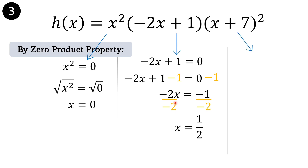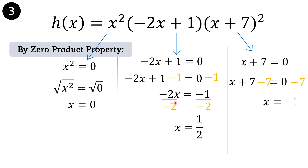Next binomial: x plus 7 equals 0. Get the additive inverse. Therefore, x plus 7 minus 7 equals 0 minus 7. x is negative 7.